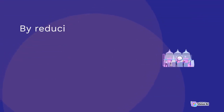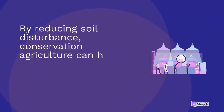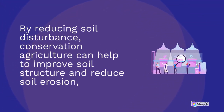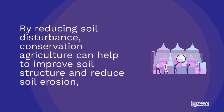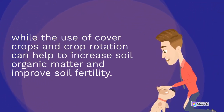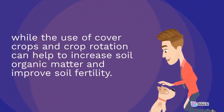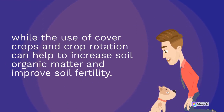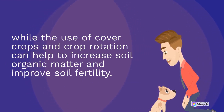By reducing soil disturbance, conservation agriculture can help to improve soil structure and reduce soil erosion, while the use of cover crops and crop rotation can help to increase soil organic matter and improve soil fertility.